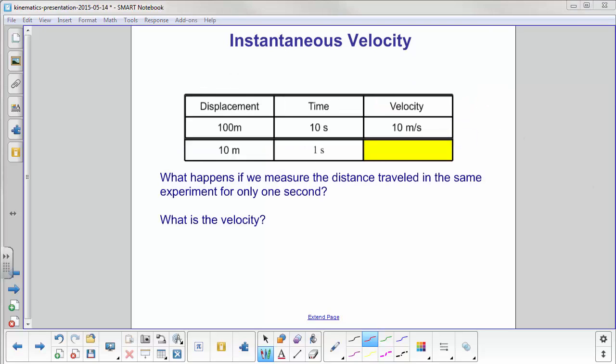Now, let's assume we only measure the displacement during this experiment, which again for us is a thought experiment, but we only measure it for one second, and we find that in that one second this object traveled 10 meters. What's the velocity or the average velocity? Well, it would be 10 meters divided by one second, and once again we get 10 meters per second.